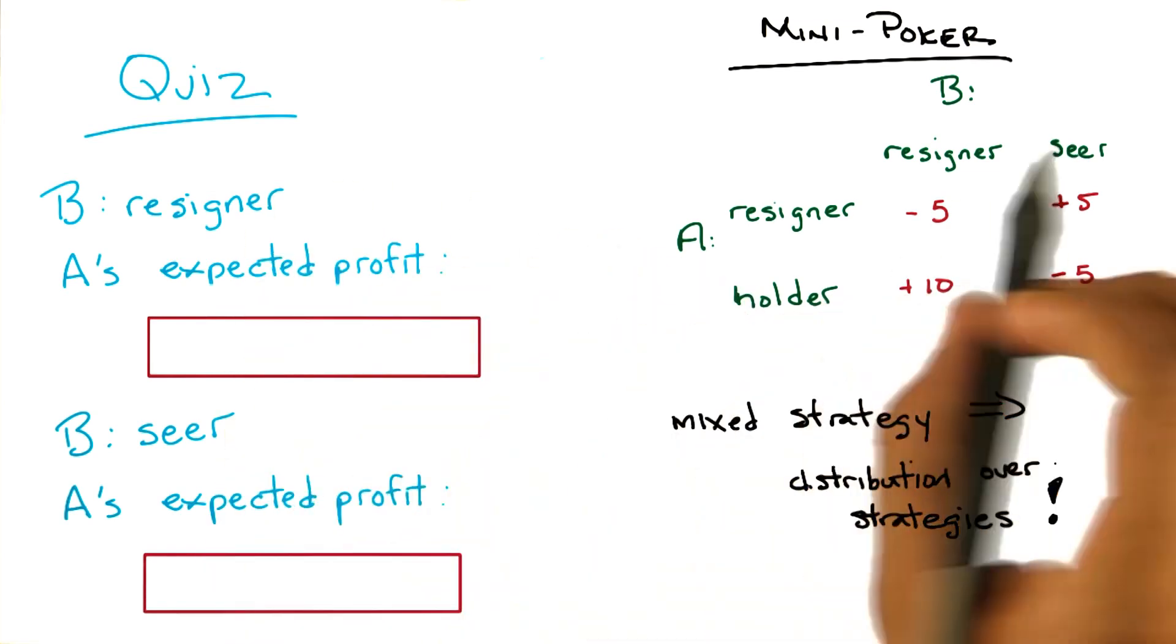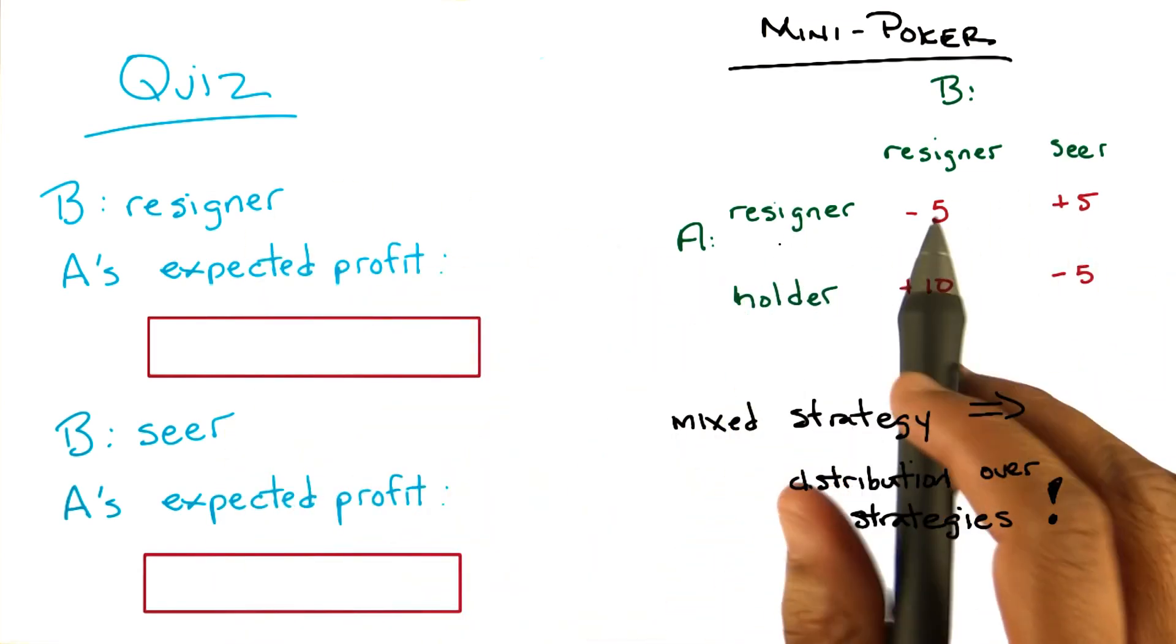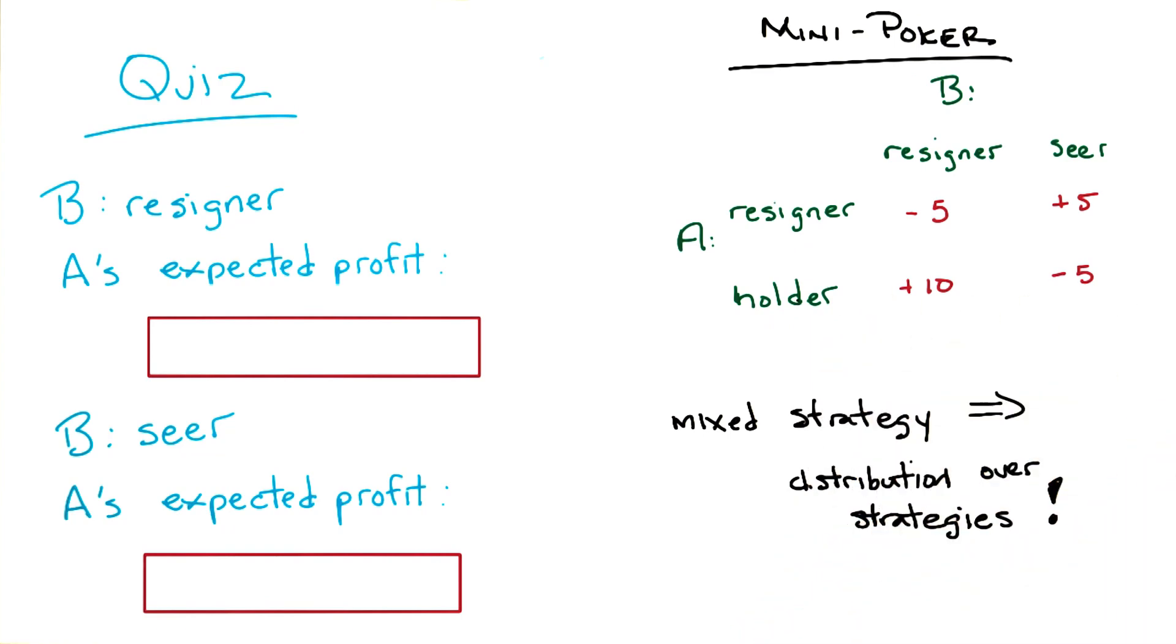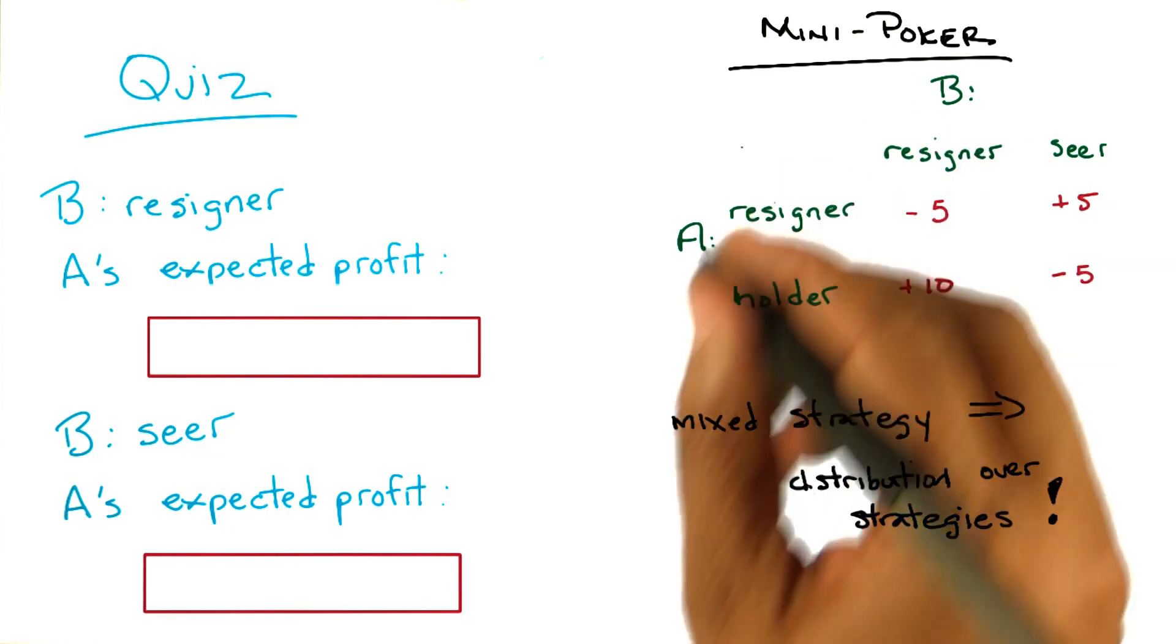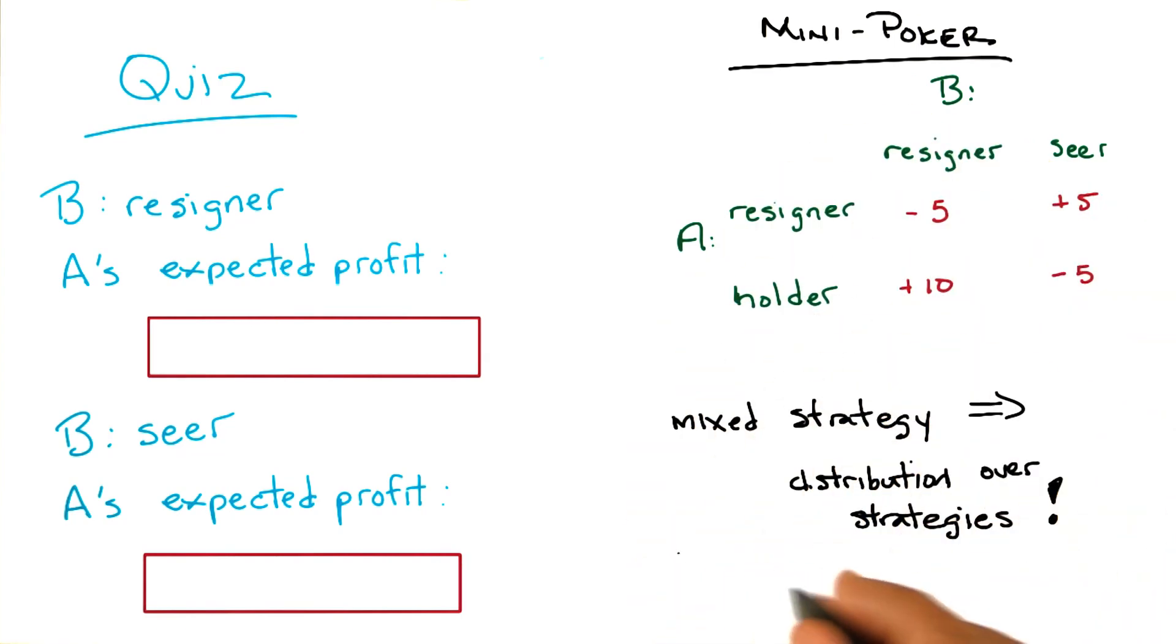So in the case of two strategies, like we have here, where A can be either a resigner or a holder, we're going to simply say that the mixed strategy for A is some value for P, which is the probability of choosing to be a holder. So do you see what's going on here?